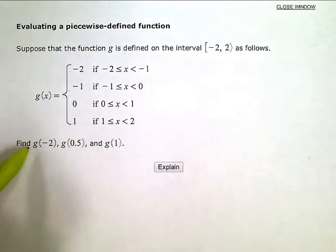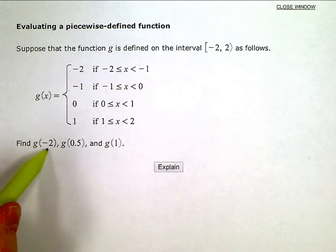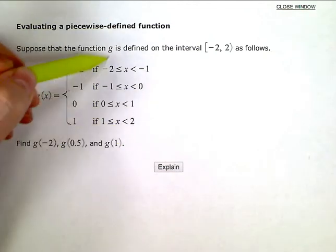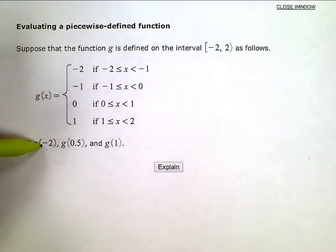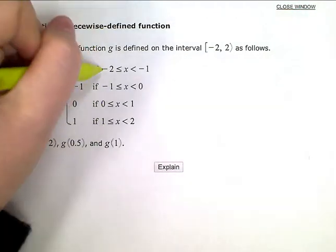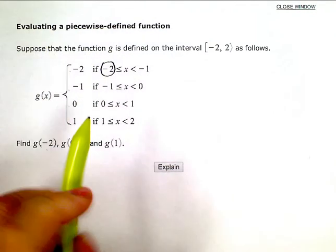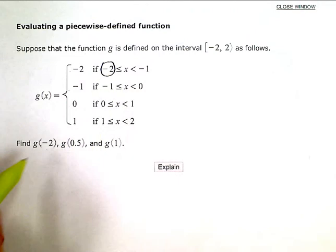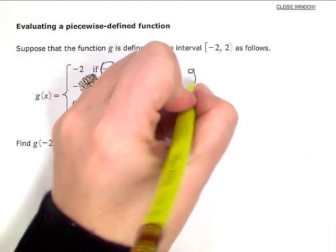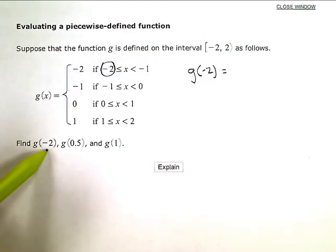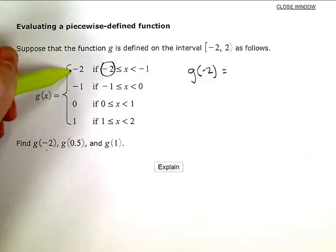So they want me to evaluate the function or find the function value when x is negative 2. I look up here at my inequalities and decide, for negative 2, which inequality do I fall in? I'm going to be right here at this top one because this one includes x equal to negative 2. So g of negative 2, if my input or my x is negative 2, my output is also negative 2.